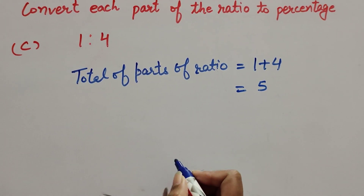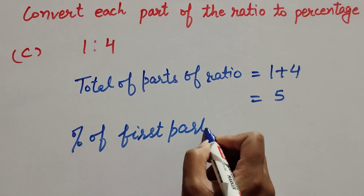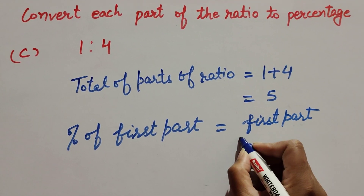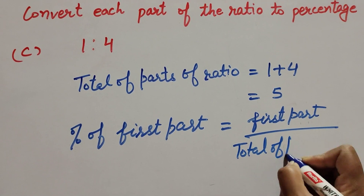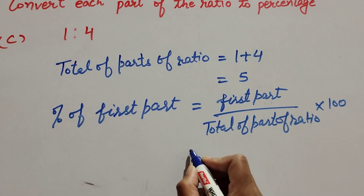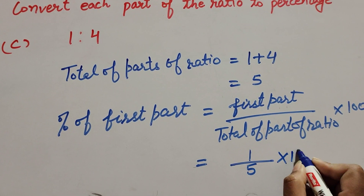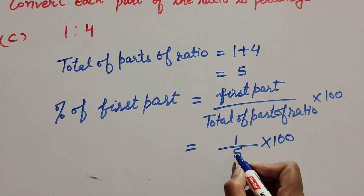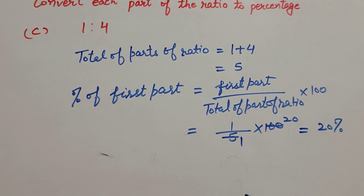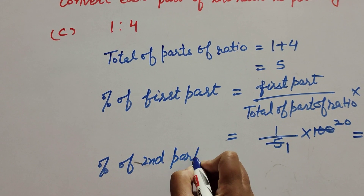Total of parts of ratio equals 5. Now we find the percent of the first part. Percent of first part equals first part over total of parts of ratio, multiplied by 100. So it is 1 over 5, multiplied by 100. 100 and 5 are both divisible by 5, so we cancel them — 5 ones are 5, 25s are 100 — so it is equal to 20 percent.